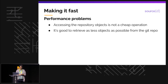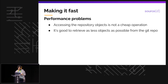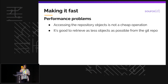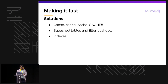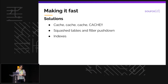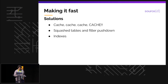Git is great at storing things, but sometimes not as good at retrieving them — the performance isn't always the best. What we try to do is read as few objects as possible from disk. We use different techniques; the most interesting ones are: first, we cache as many objects as possible in memory so we don't have to read, decompress, and process them again repeatedly.